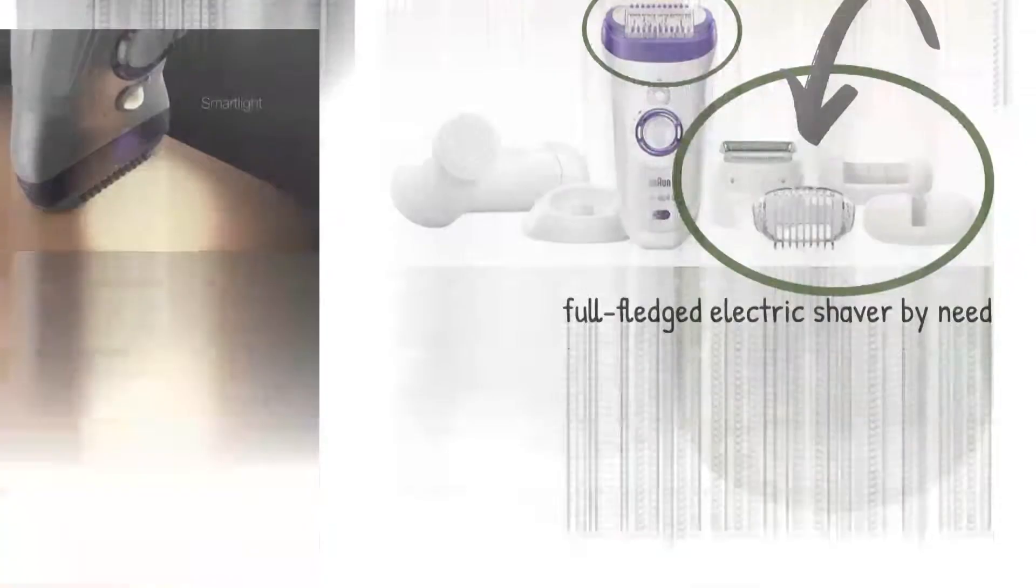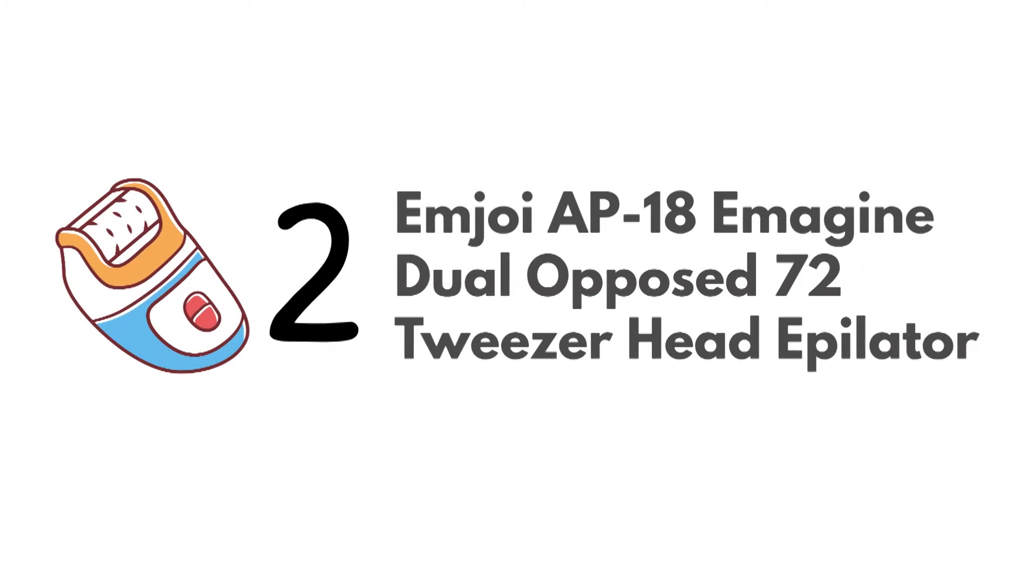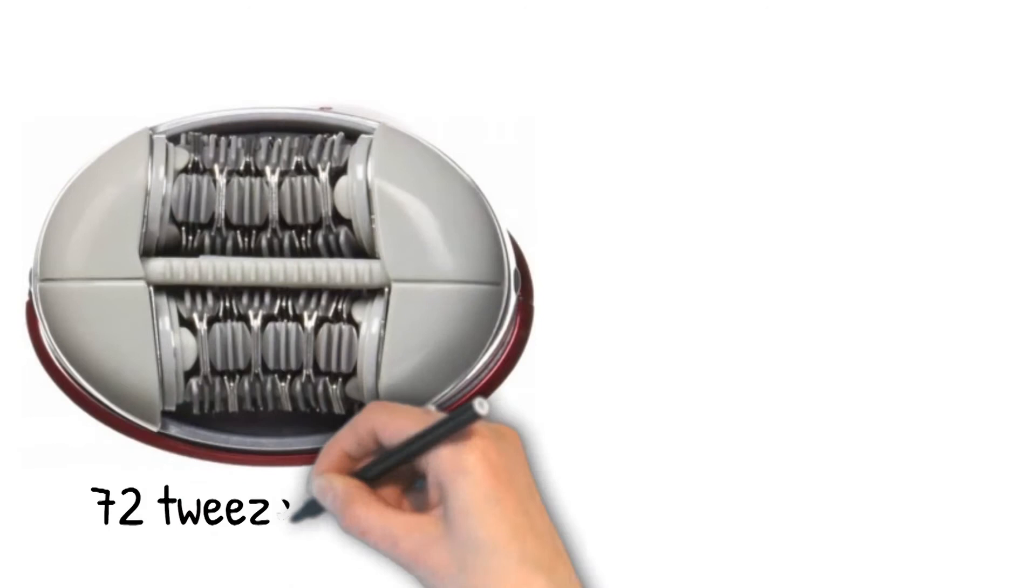At number 2, we have the Emjoi AP-18 Emagine Dual Opposed 72 Tweezer Head Epilator. Dimensions of this product are 1.5 by 5 by 5 inches and it weighs 14 ounces. The Emagine features 72 tweezer heads to remove hair without the need for multiple passes.